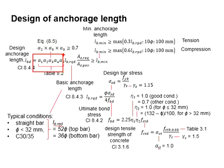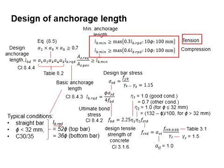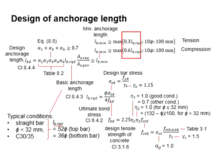This factor is multiplied with the basic anchorage length and also the ratio of As,required divided by As,provided. The design anchorage length must be at least greater than the minimum anchorage length. The minimum anchorage length is given by equations for tension and compression conditions, including at least 10 times the bar diameter, at least 100 mm, and at least 0.3 or 0.6 times the basic anchorage length.